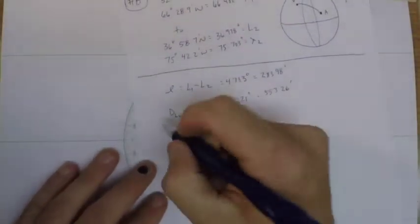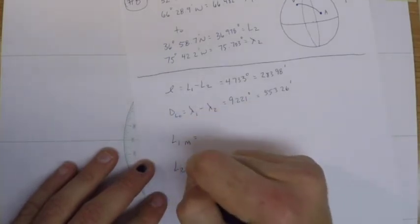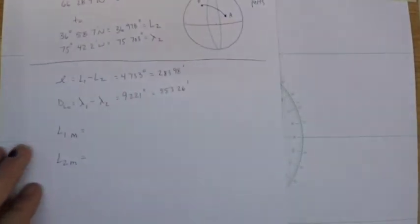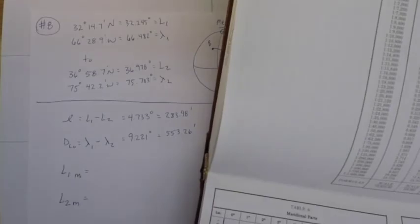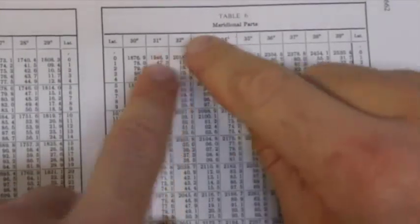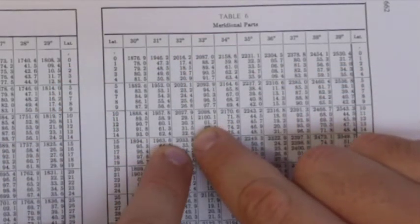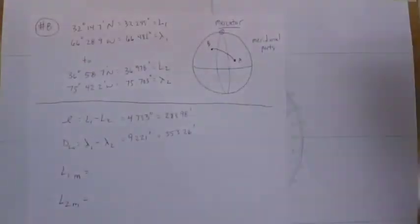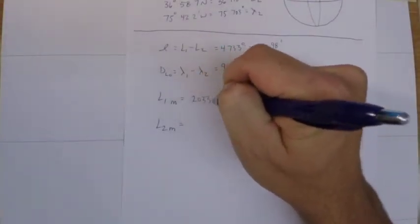So for latitude one meridional parts and latitude two meridional parts, I'll just go ahead and look in the book for those. Latitude one was 32° 14.7', so here's 32° 14', and now you can see I'll just round up to 15. So this is going to be 2033.8.